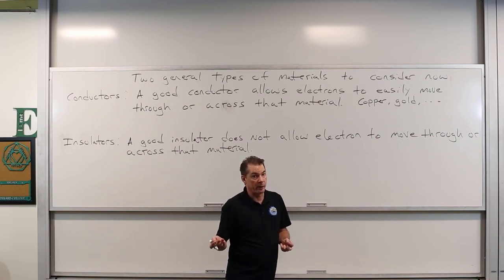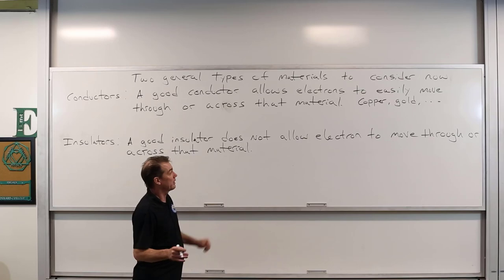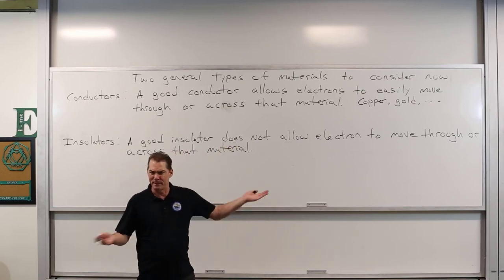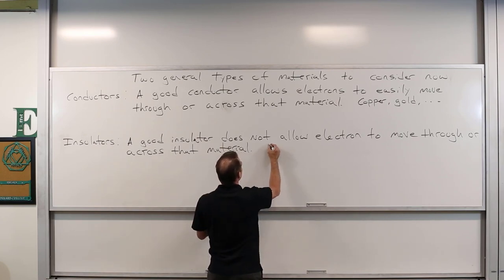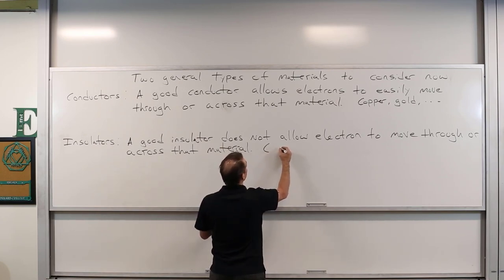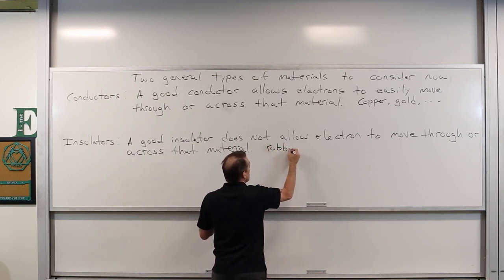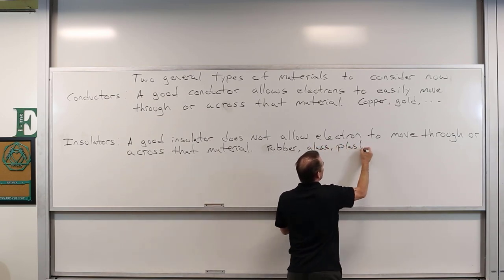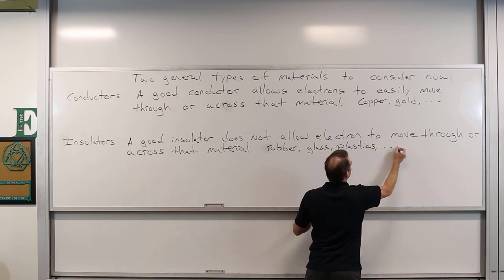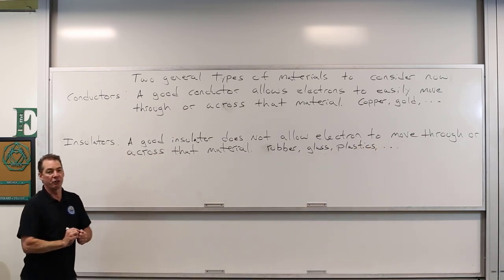Can we use insulative materials for conductive pathways? No, because they're not conductive. Particularly good insulators include rubber, glass, plastics, paper, and wood — those are all really good insulative materials.